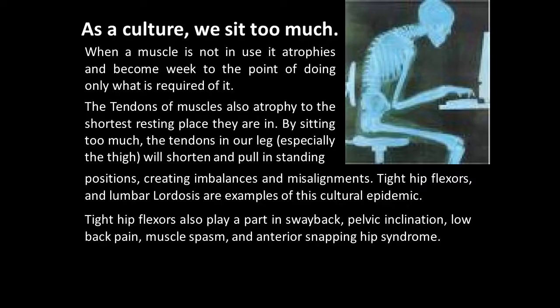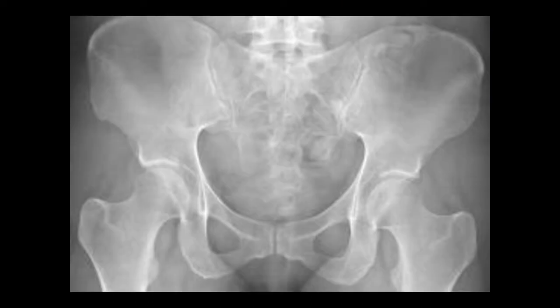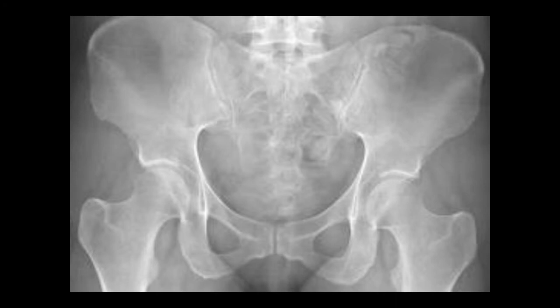As a culture, we sit too much. When a muscle is not in use, it atrophies, becoming weak to the point of doing only what is required. The tendons also atrophy to the shortest resting place. By sitting too much, the tendons in our leg, especially the thigh, will shorten and pull in standing positions, creating imbalances and misalignments, particularly in the pelvis. Tight hip flexors and lumbar lordosis are examples of this cultural epidemic.